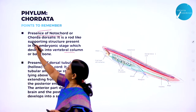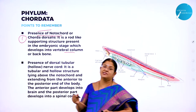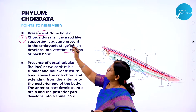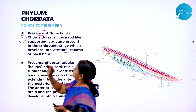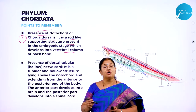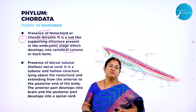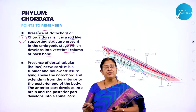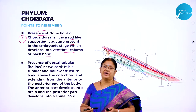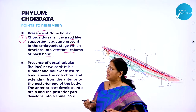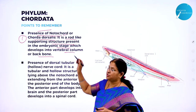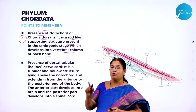The first very important chordate character, which will be asked in examinations, is the presence of notochord, also called chorda dorsalis. It is a rod-like supporting structure present in the embryonic stage. Later on it is transformed into the vertebral column or backbone, which gives support to the whole body and also a specific shape to the body.